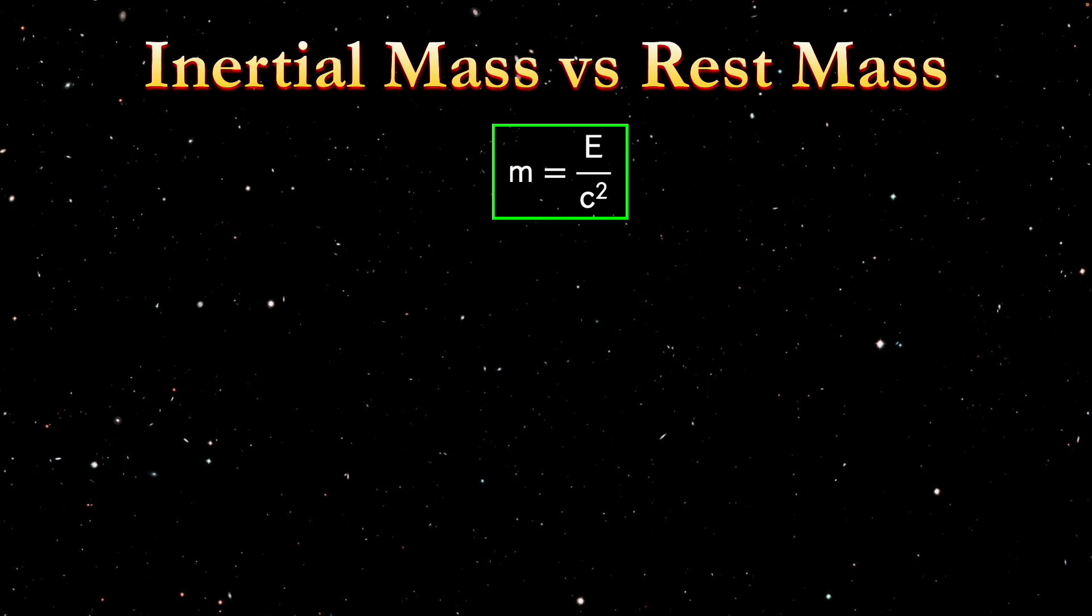We start off with this equation, M equals E over C squared. This is in fact the equation that Einstein first derived. He did not derive E equals MC squared. He derived M equals E over C squared. And in that derivation, he was specifically looking for the mass of a photon. And that's what he found, that the mass of a photon was equal to its energy divided by the speed of light squared. But at the time, the only mass he cared about was the inertial mass. There was no concept of rest mass yet. So in this equation, he found that the inertial mass of a photon is E over C squared, not the rest mass.